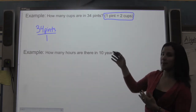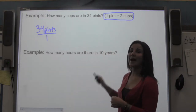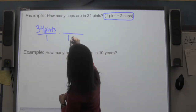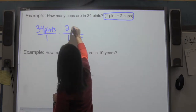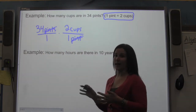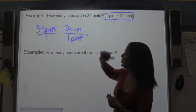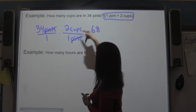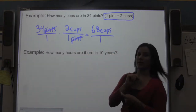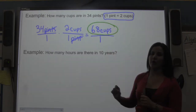I'll set up the multiplication so that pints is in the numerator — which I already have — and pints is in the denominator so they cancel. I multiply by 1 pint on the bottom and 2 cups in the numerator. The pints cancel out, and I multiply: 34 times 2 is 68, and 1 times 1 is 1, giving me 68 cups in 34 pints.